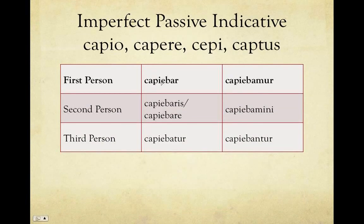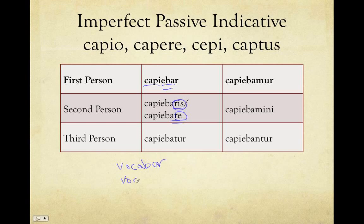This applies for the imperfect too. For the imperfect, we take our stem plus the tense marker 'eba-' — for the first conjugation, 'voca-ba-' — and then add our passive endings. So for a fourth conjugation verb like 'capio': capiebar, capiebaris, capiebatur, capiebamur, capiebamini, capiebantur. Note that the 'ris/re' is interchangeable. For the first conjugation: vocabar, vocabaris, vocabatur, vocabamur, vocabamini, vocabantur. So you know how to conjugate in the imperfect — just change those endings from m, s, t, mus, tis, unt to r, ris, tur, mur, mini, untur.